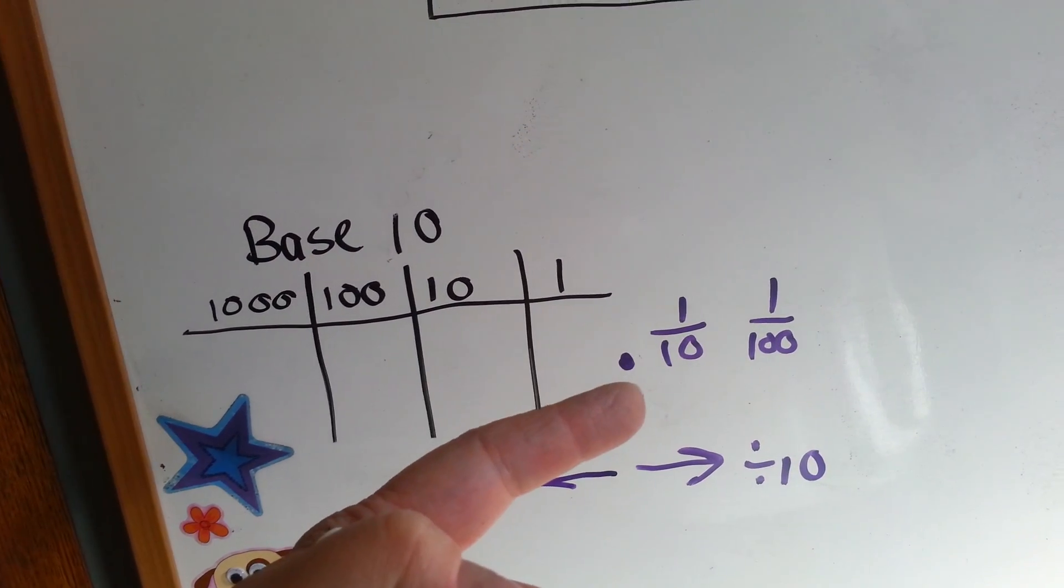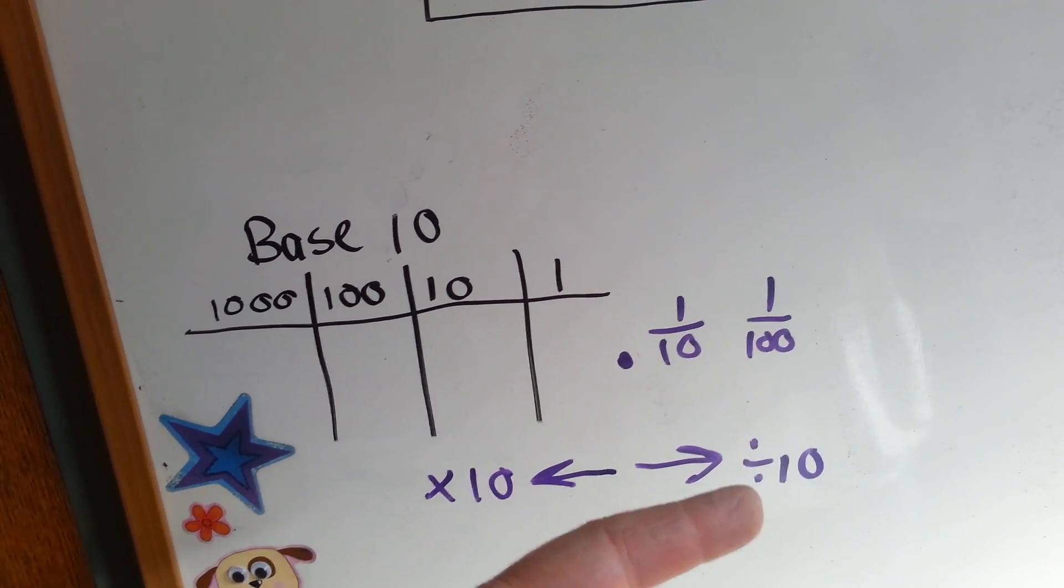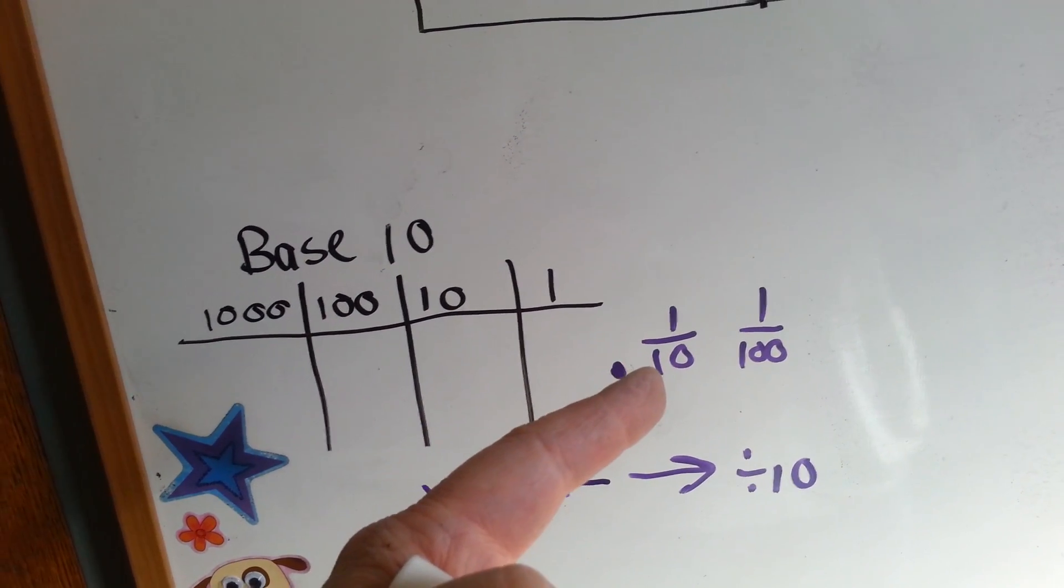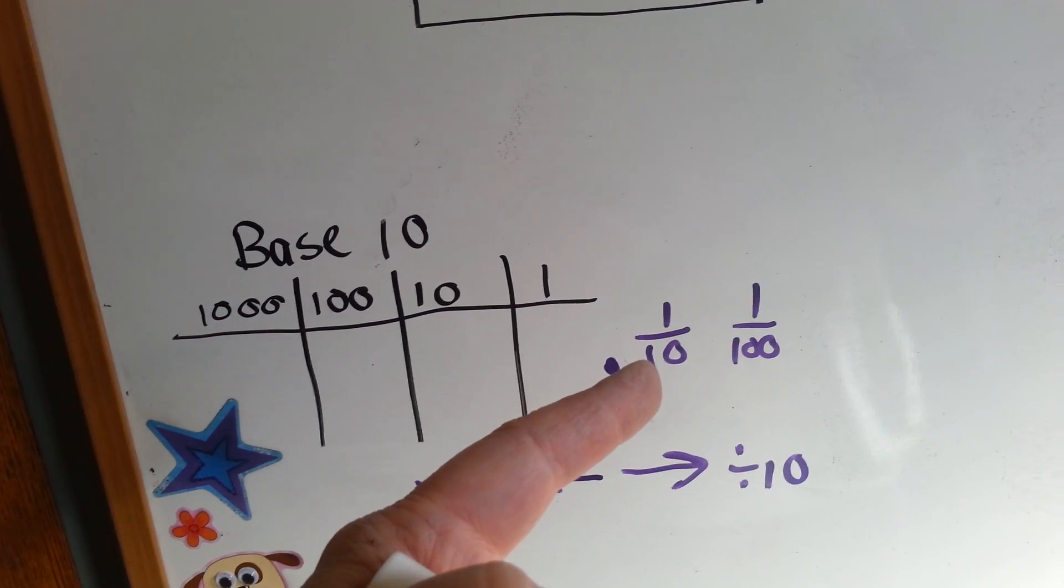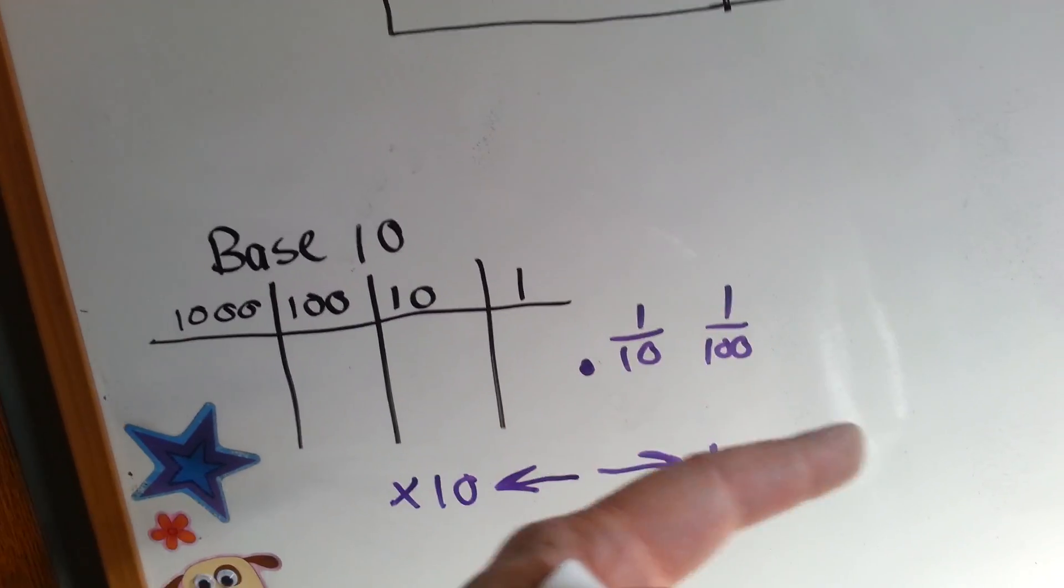When we go to the right, to the right of the decimal point, we divide by 10. 1 divided by 10 is a tenth. A tenth divided by 10 is a hundredth, and it keeps on going to the right.